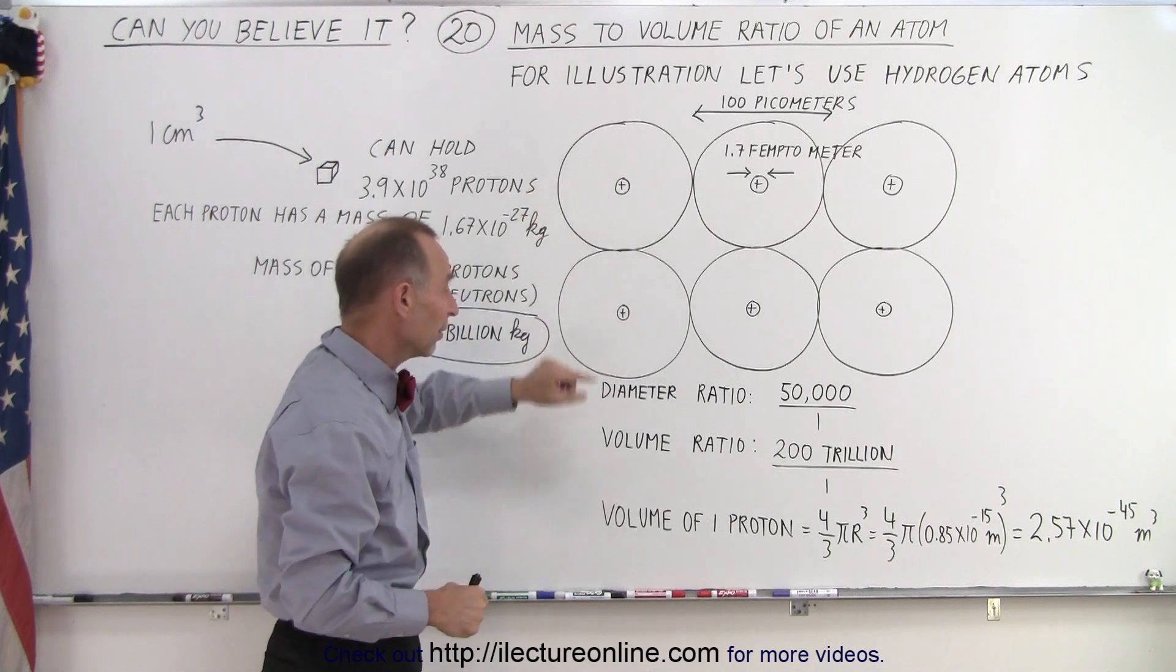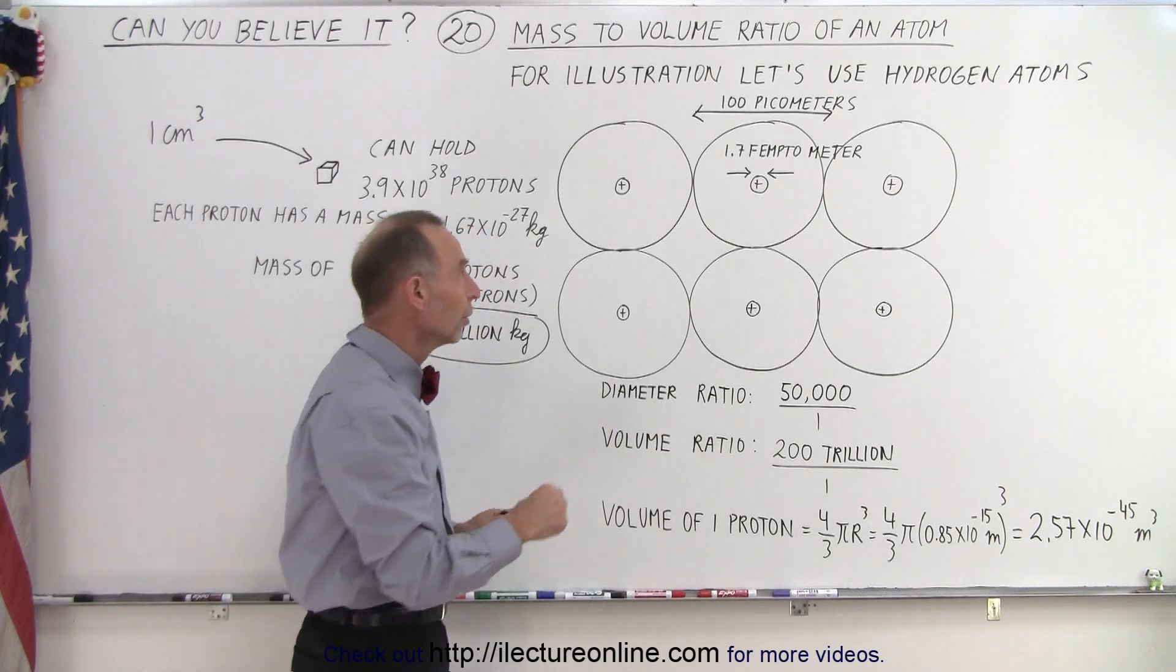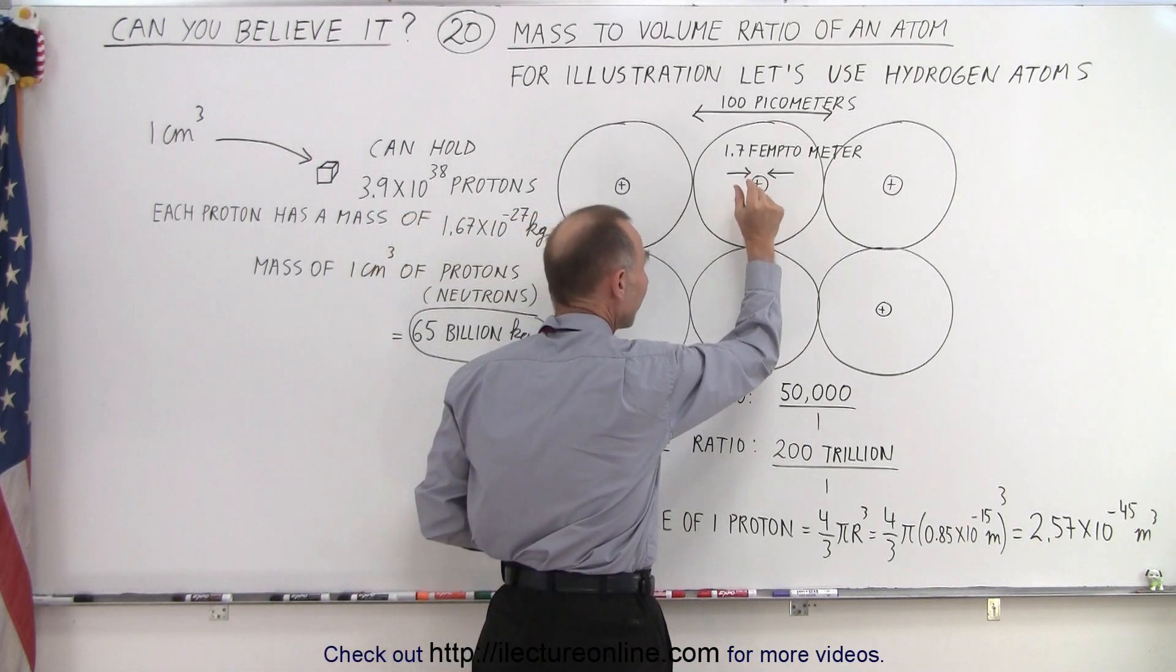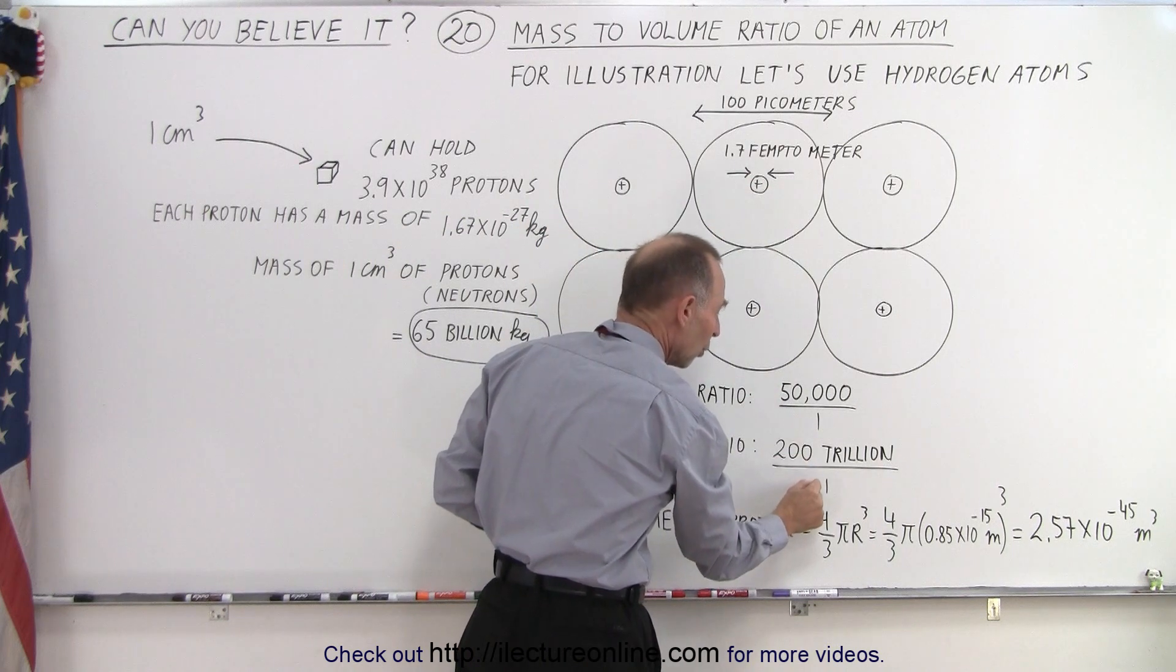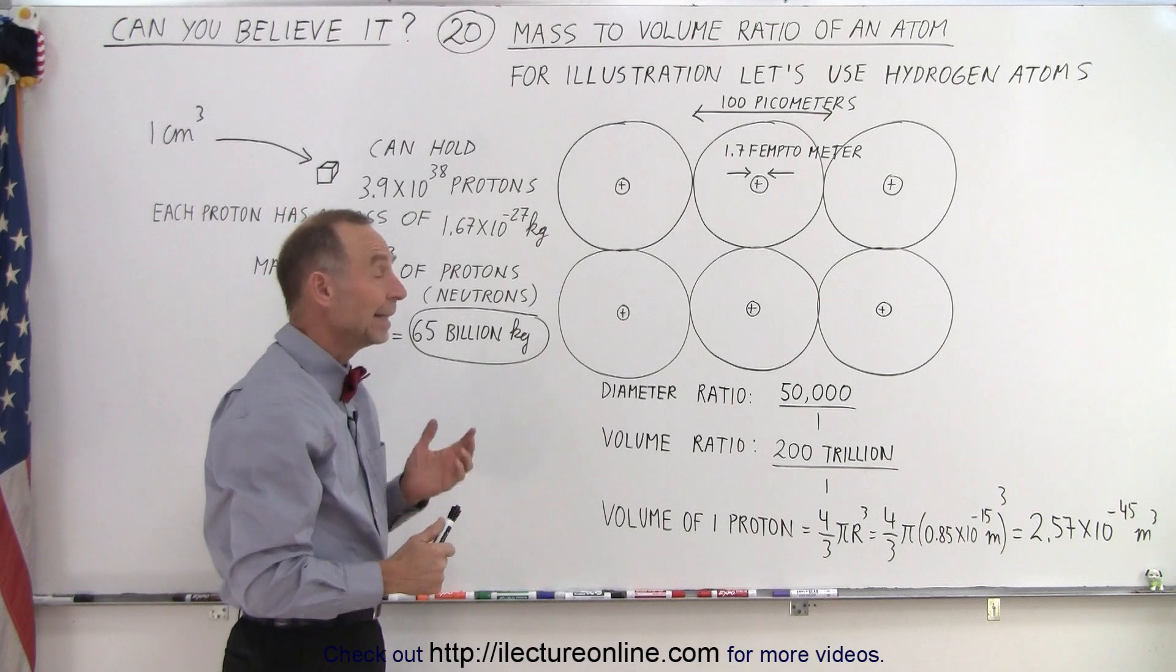And then if we do a volume comparison, notice that the volume ratio is about 200 trillion to 1. The nucleus takes up a very tiny fraction, one out of 200 trillion, of the total volume of the atom.